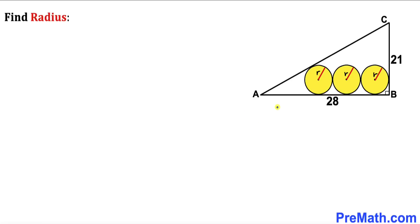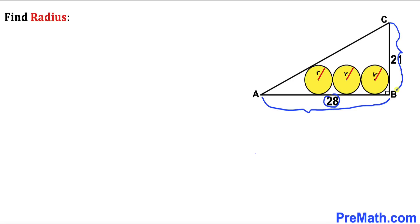Welcome to pre-math. In this video we have three identical circles fully inscribed in a right triangle ABC, such that the yellow circles are tangent to each other. The side length AB is 28 units, side length BC is 21, and our task is to calculate the radius lowercase r.